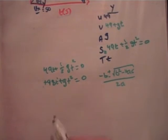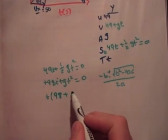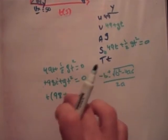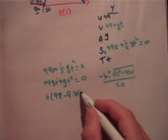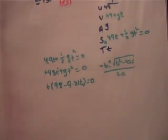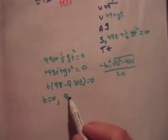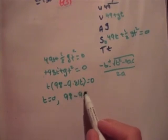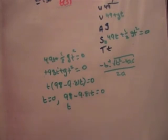So let's solve that. I'm going to take out t. So we have 98 minus 9.81t equals 0. If you have two things multiplied together to get 0, one of them must be 0. So we have t is equal to 0, and 98 minus 9.81t is equal to 0. Therefore, in this case here, t is equal to 98 divided by 9.81. So we'll say that's approximately 10 seconds.